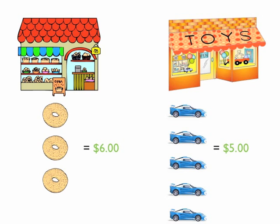Why? To maximize your utility, you want to purchase the greatest combination of goods possible. You left the store with eight items instead of seven, so utility maximization was reached with eight items.